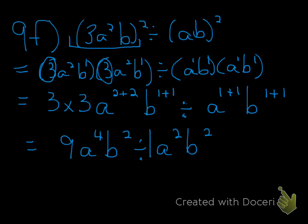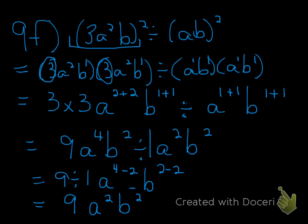There's an invisible coefficient of 1 here — the coefficient is the number in front of the expression. So 9 divided by 1. I'm going to divide my a's: a to the power of 4 divided by a to the power of 2 is a to the power of 4 minus 2. And for the b's, we have b to the power of 2 divided by b to the power of 2, which is b to the power of 2 minus 2. 9 divided by 1 is 9, a to the power of 2, b to the power of 0. And that is the final answer.